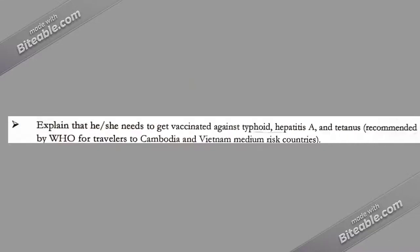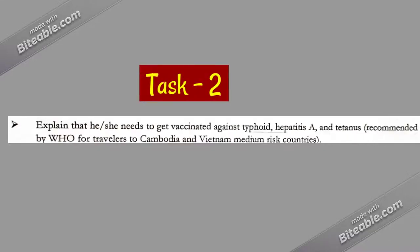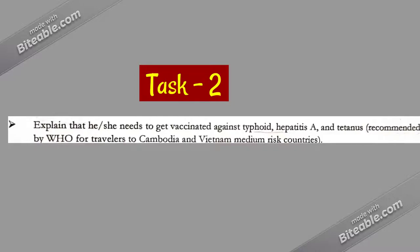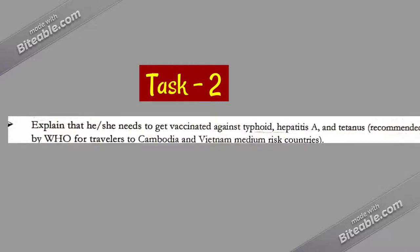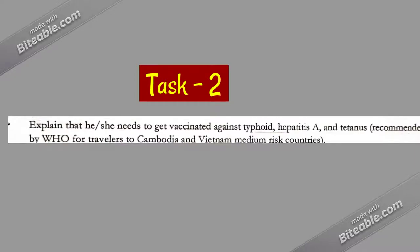Thank you for your information, Mr. Thomas. As per what you have shared, I understand you are traveling to Cambodia and Vietnam. I am sorry to inform you that these are high-risk countries. If you travel there, it is mandatory to get some vaccinations — especially typhoid, hepatitis A, and tetanus. This is per WHO guidelines. Without receiving these vaccinations, there will be problems for your travel.